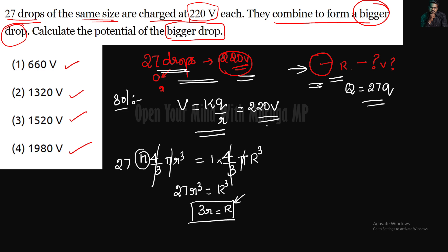What will be the new potential? Let us take that as V dash, which equals k times Q divided by R. Here, capital Q is the total charge.